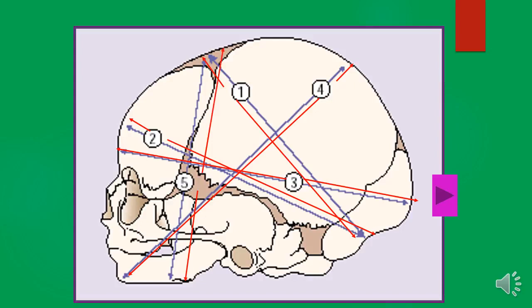The fifth diameter is called the submental bregmatic, measured from the chin to the center of the bregma. The sixth diameter is called the submental vertical, which is about 11.5 centimeters, measured from the point where the chin joins the neck to the highest point on the vertex.